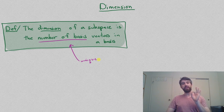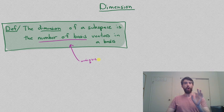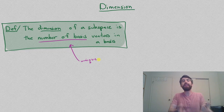So, this is a very important theorem that you can only have this one number of basis vectors for any subspace because it allows us to make this definition that we did. The dimension of a subspace is the number of basis vectors.